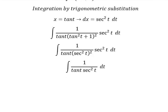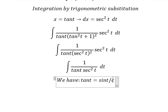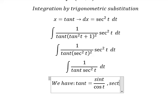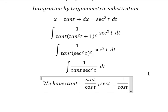Next, we have the formula in here. tan t we have sin t over cos t, and secant of t we have 1 over cos t.